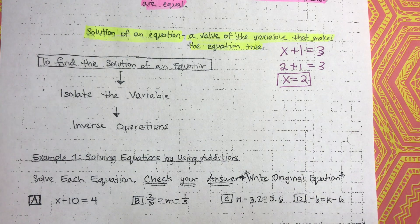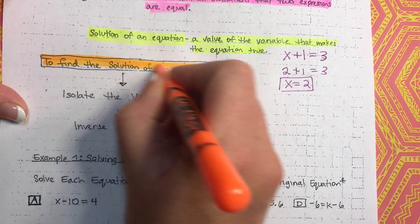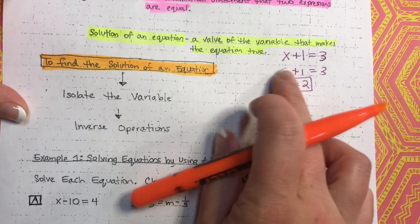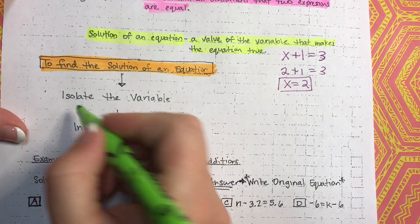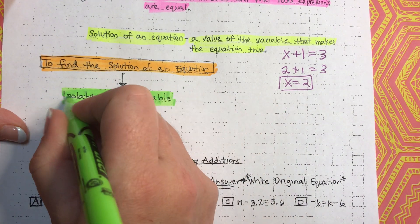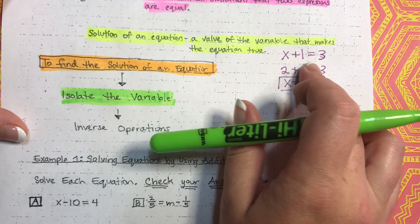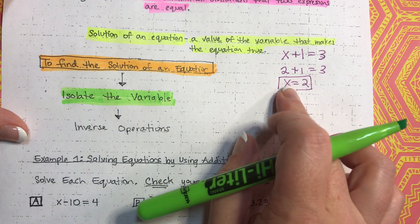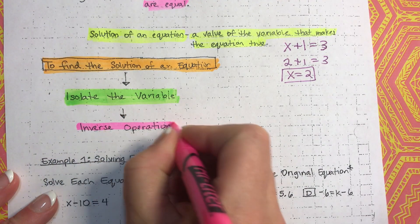So, to find the solution of an equation, this is what we're going to be working on. Whenever you want to find the solution, the first thing you always have to do is isolate the variable. Isolate the variable means get that variable by itself — that letter. So, not x plus 1 with the plus 1 over there; we have to isolate x and get it by itself. Then once it's by itself, we just know what it equals — it equals 2. In order to isolate the variable, you have to use inverse operations.